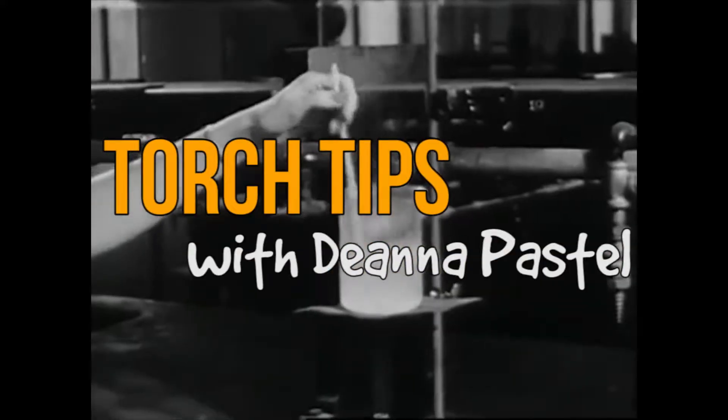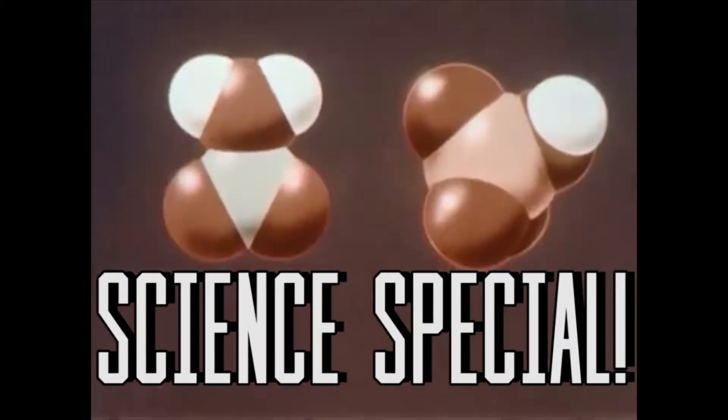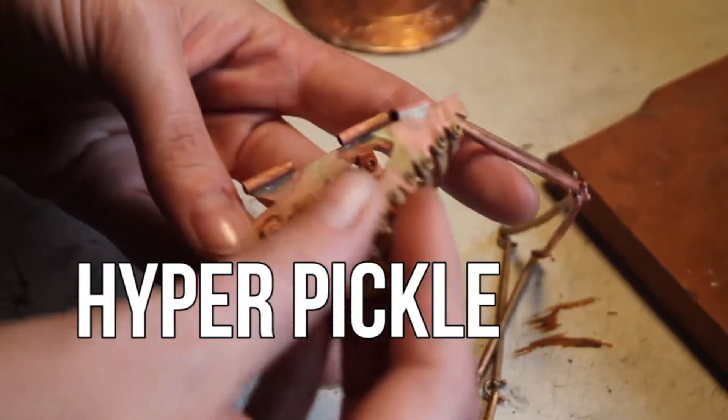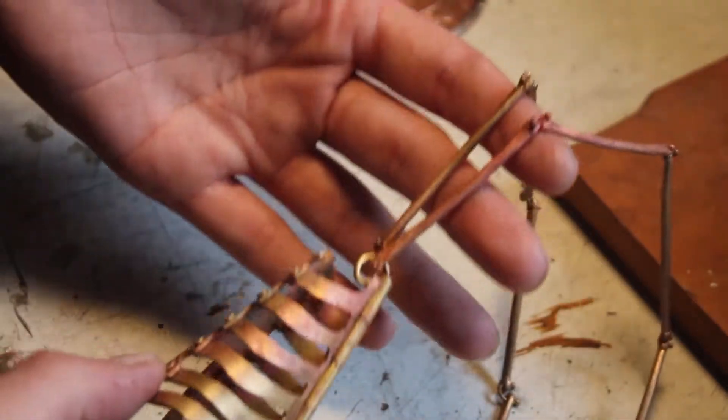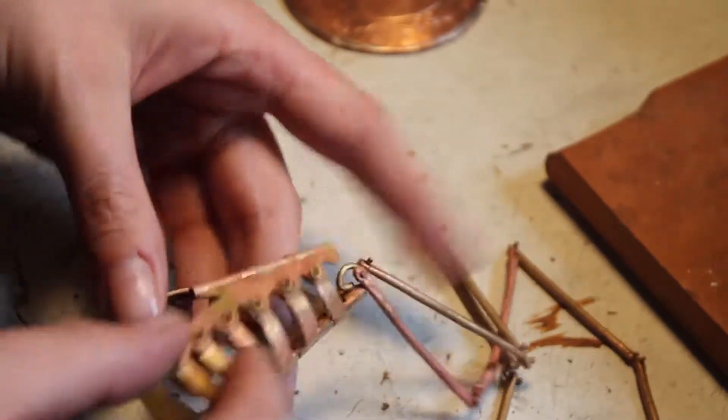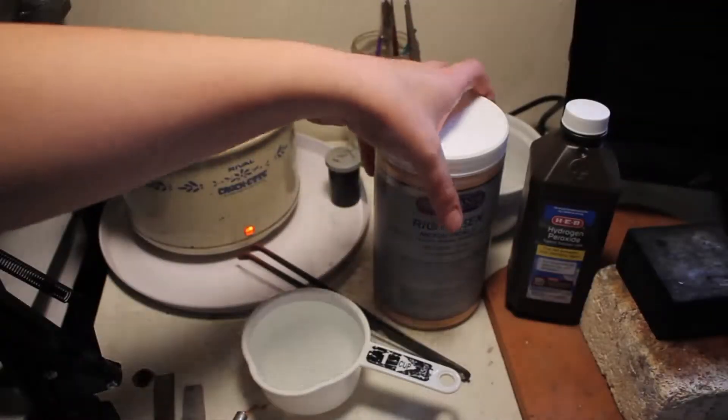Hyperpickle is a great way to save yourself hours of sanding time by making science work for you. A common misconception is that when you pickle base metals they come out clean. However, because of the oxidation or copper content, especially found in brass, they usually come out rosy.